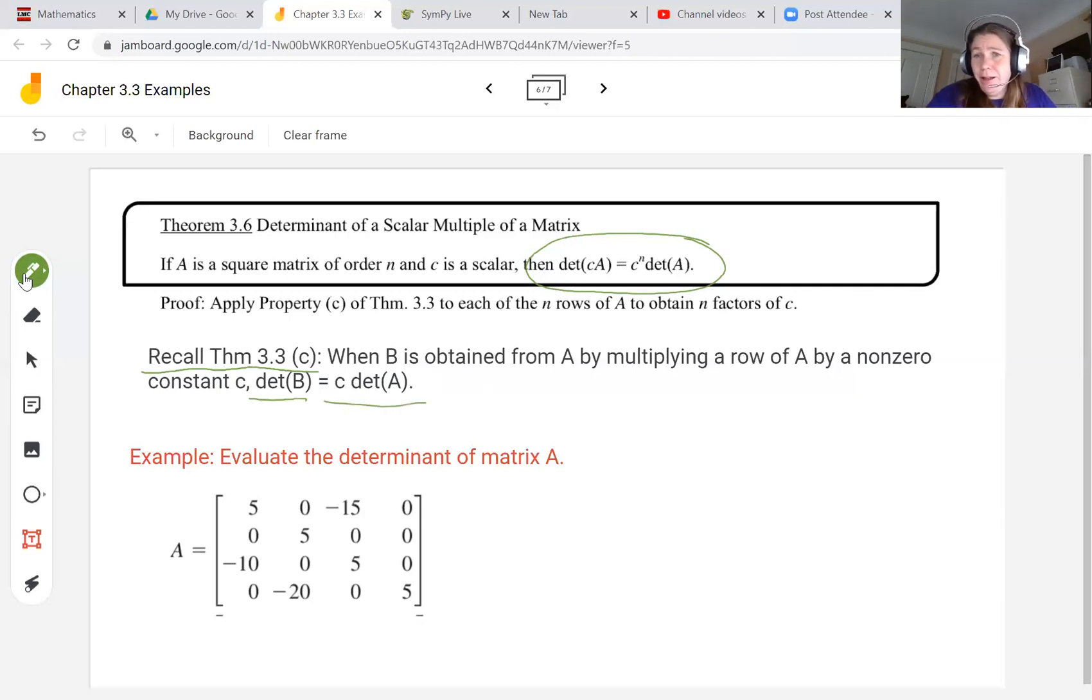So imagine doing this to n rows. If each row is multiplied by that constant, then we get C to the n times the determinant of A. All you have to do is take that theorem 3.3 and apply it to each of these n rows, and you'll have C times C times C times C, or C to the nth power, multiplied by the determinant of A.